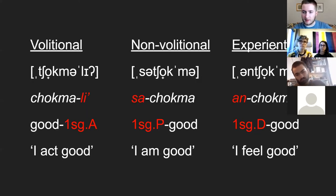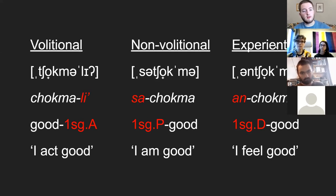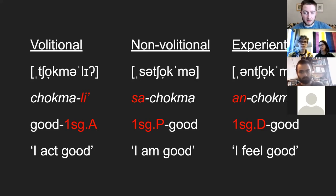Chickasaw is unique in that it explicitly marks whether the subject of the verb is the agent, the patient, or something merely experiencing the effects of the verb. We might call these verb forms volitional, non-volitional, and experiential. To illustrate with the word 'chokma,' meaning good: 'chokmalet' means 'I act good' — you're the agent. 'Sa chokma' means 'I am good' — you're receiving the act of being made good. And 'antrokma,' experiential, simply means 'I feel good' — just an expression of your experience of the world.